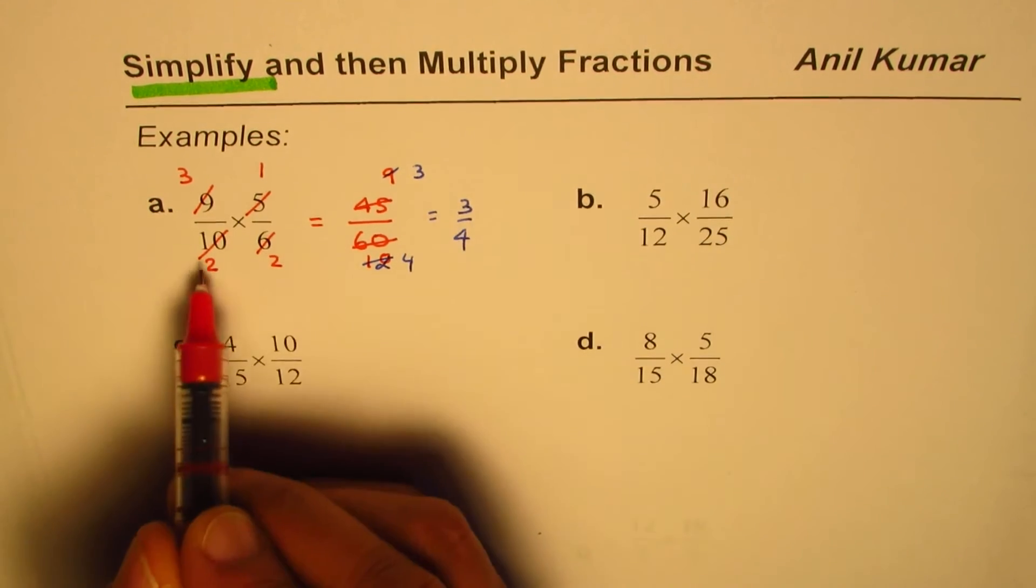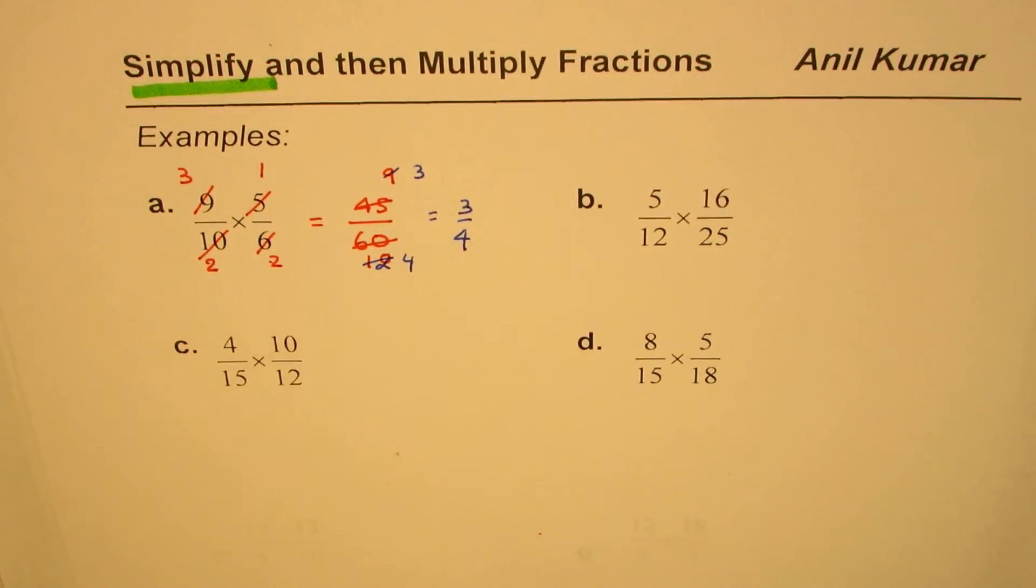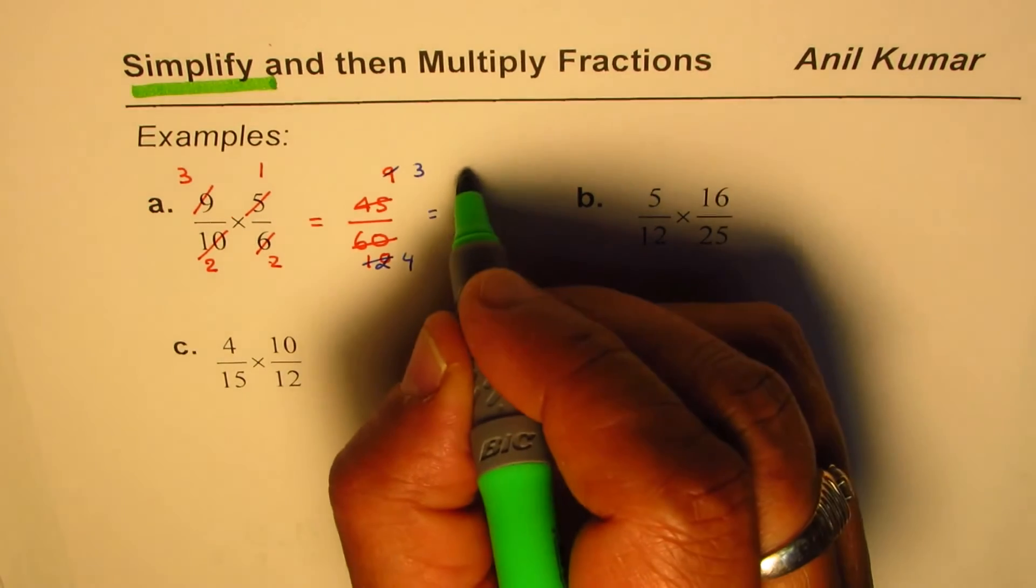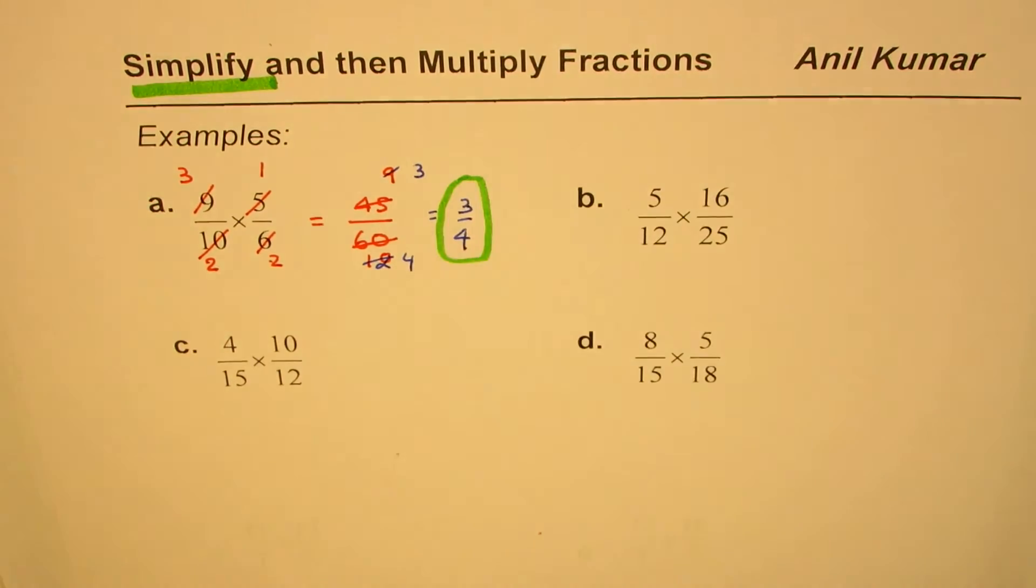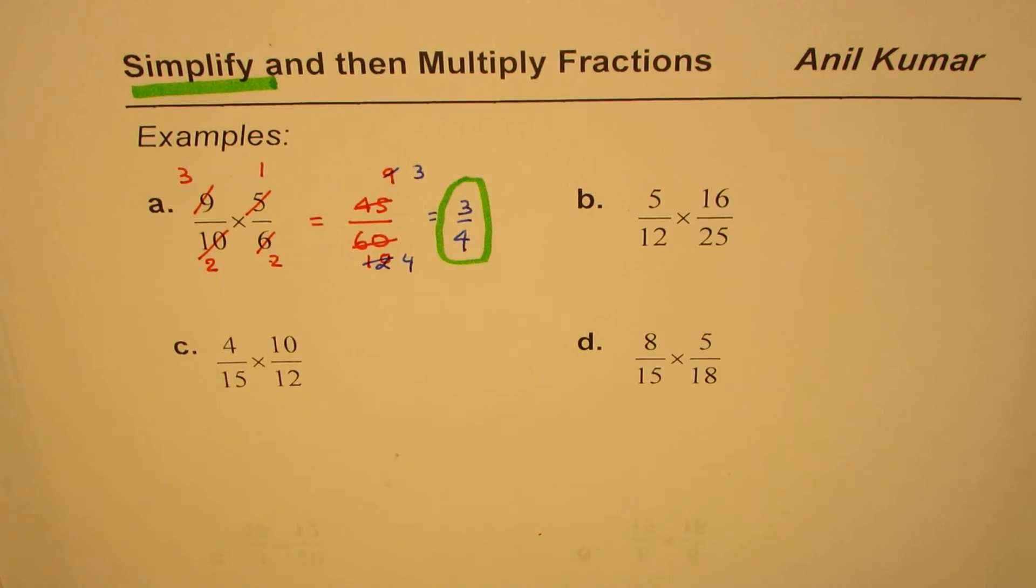Now if I multiply 3 times 1, I get 3. 2 times 2, I get 4. Exactly the same answer. So the answer 3 over 4 is indeed correct. Simplifying helps. I hope you got the idea. These are practice questions for you. I'll do one more.